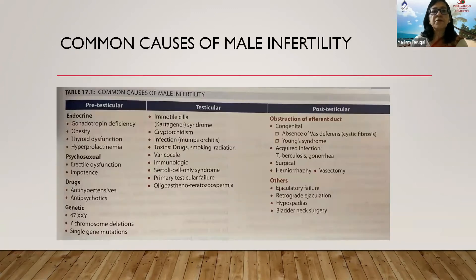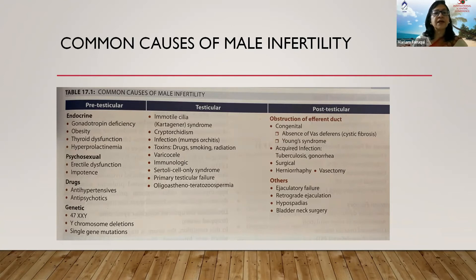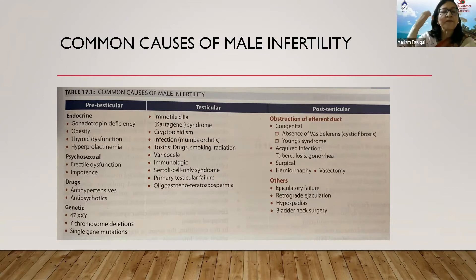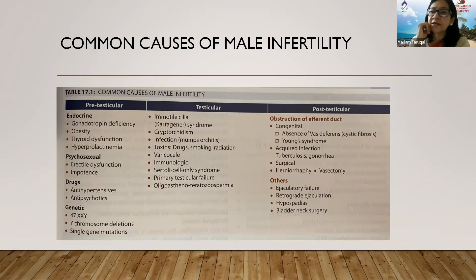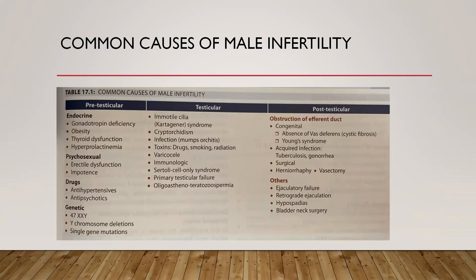Pre-testicular causes include endocrine factors such as gonadotrophin deficiency, obesity, thyroid dysfunction, and hyperprolactinemia. Psychosexual causes include erectile dysfunction and impotence. Several drugs such as antihypertensive and antipsychotic medications may hinder spermatogenesis and lead to infertility. Genetic causes include Klinefelter syndrome, Y chromosome microdeletions, and single gene mutations affecting spermatogenesis.